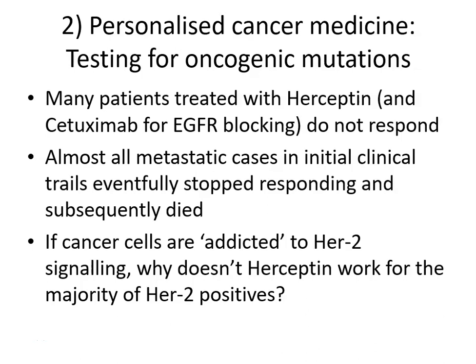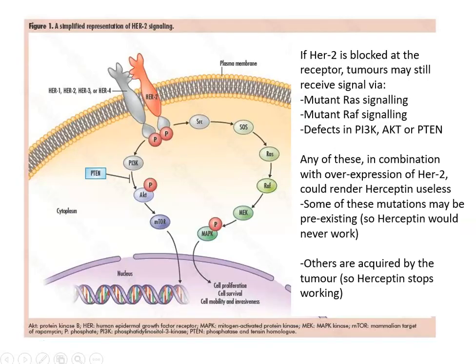This is part 2 of the oncogene targeted therapies lecture for cell pathology and infection, lecture 7. Following on from the oncogene gene amplification and gene duplication work covering HER2 and epidermal growth factor receptor, we find that many patients treated with Herceptin or Cetuximab for EGFR blocking do not respond from the outset. Almost all cases with metastatic disease in initial clinical trials of Cetuximab and Herceptin eventually stopped responding and subsequently died. We need to think about why, given that therapies are based on the concept that cancers are addicted to a particular oncogene.